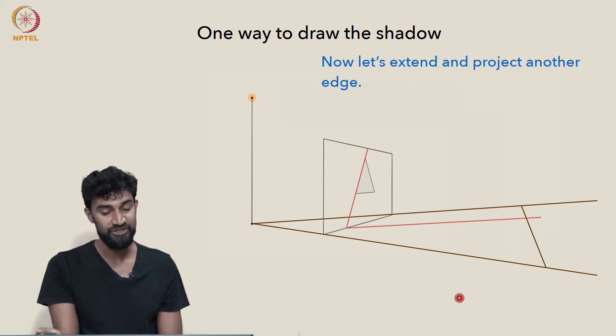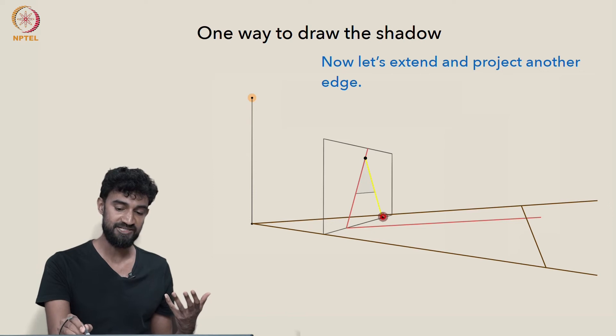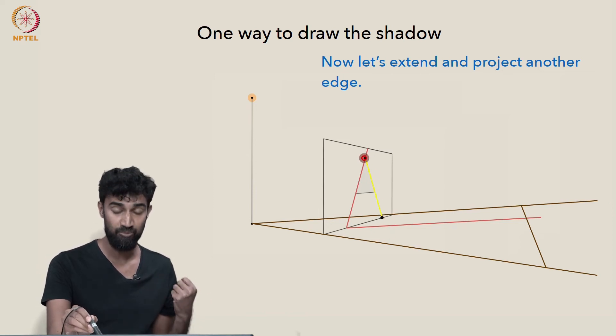Let's extend and project another edge. So I'm just going to extend this edge down to the ground plane, this yellow, this edge that I'm coloring yellow. Well, again, the part on the ground plane is done. Its projection is there itself. It's already on the ground. So we just have to worry about this top point.